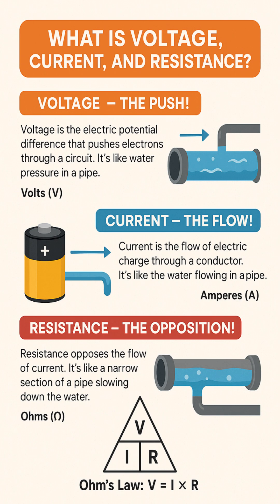So, in summary: voltage pushes, current flows, and resistance opposes that flow.